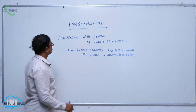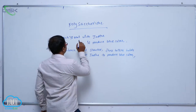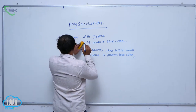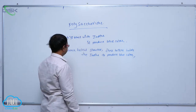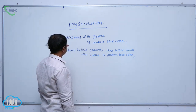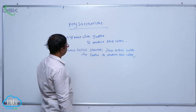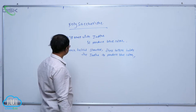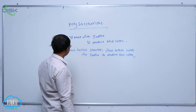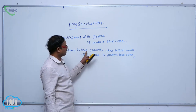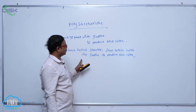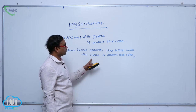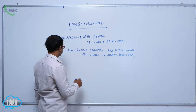Starch reacts with iodine and produces blue color because starch has a helical structure. These helicals hold the iodine to produce the blue color.